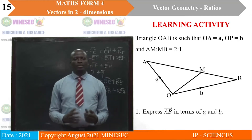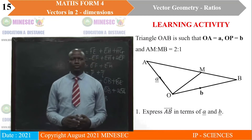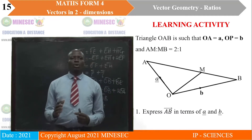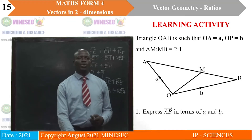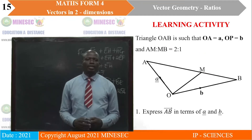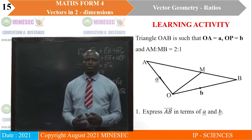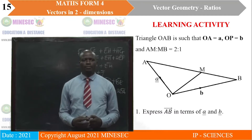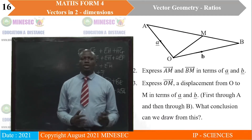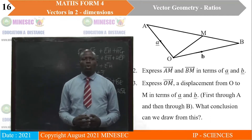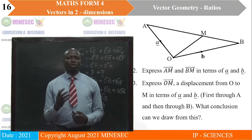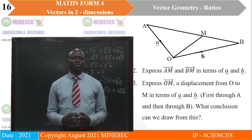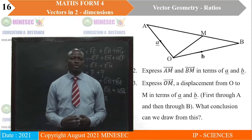Learning activity. Let's look at this learning activity. We have a triangle OAB such that vector OA is equal to small a and vector OB is equal to b. M is a point on AB such that AM to MB is 2 to 1. We will express first vector AB in terms of a and b, then express AM and BM in terms of a and b, and then express OM — a displacement from O to M — in terms of vectors a and b. We will do it in two ways: first through point A and then through point B.